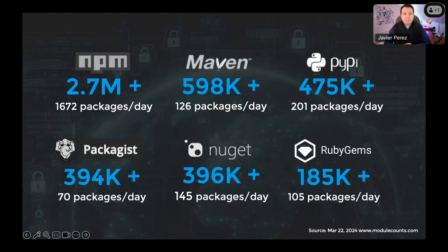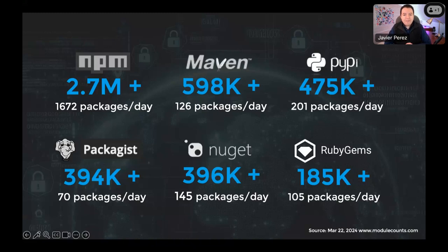For example, the npm registry has more than 2.7 million packages, and the number below is even more impressive — it's new packages per day. You can get these numbers at modulecounts.com, which has APIs connecting to those repositories. GitHub now has over 100 million users and more than 450 million repositories. Everything is now based on open source software — no one starts from scratch anymore, and we're going to talk about that.